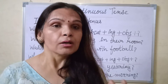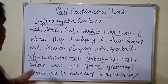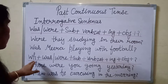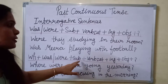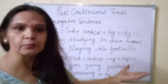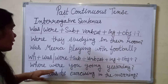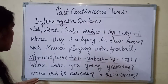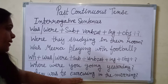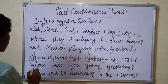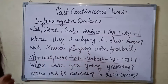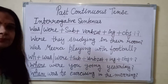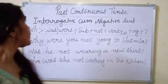Now see the structure with the wh-family. When we use what, when, where in sentences, that is called the wh-family. The wh-family word always comes at the beginning of the sentence. Structure: Wh-word + was/were + subject + verb's first form + ing + object + question mark. For example: Where were you going yesterday? When was he exercising in the morning?